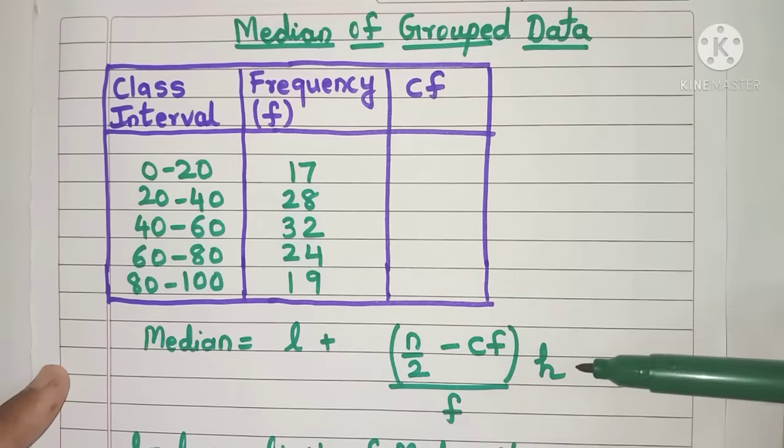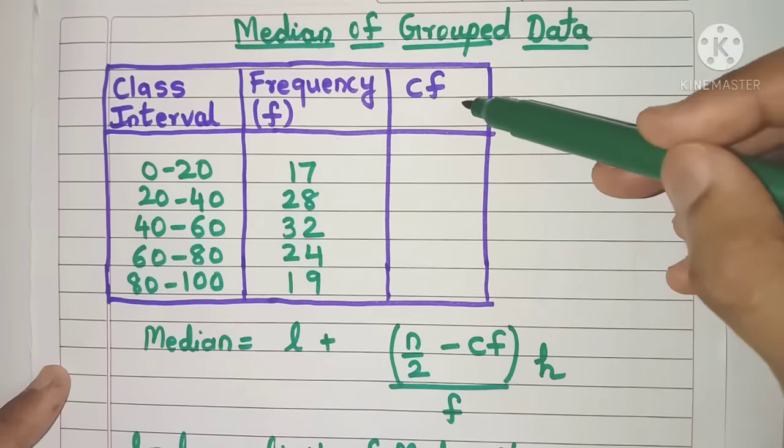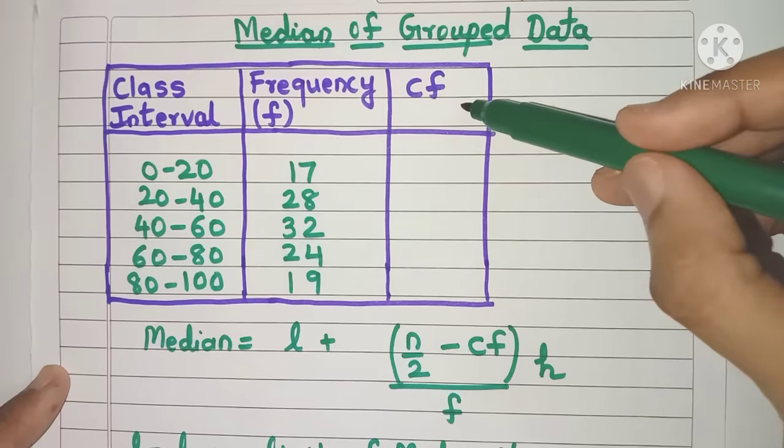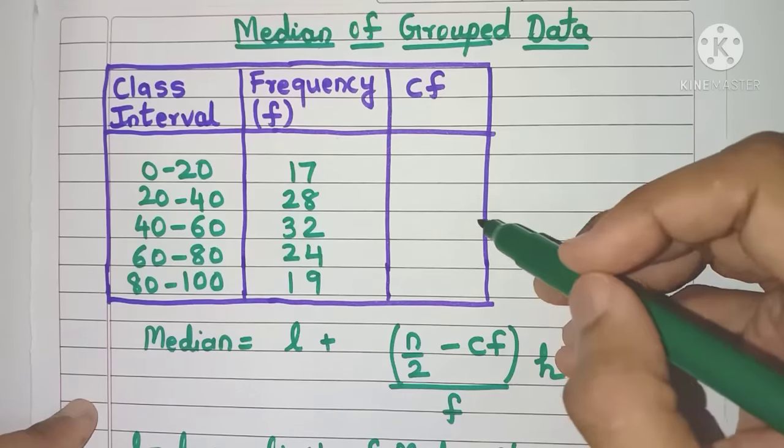Before we use this formula, we need to write a new column called the CF, that is the cumulative frequency column. So what is cumulative frequency? It is nothing but the added frequency.